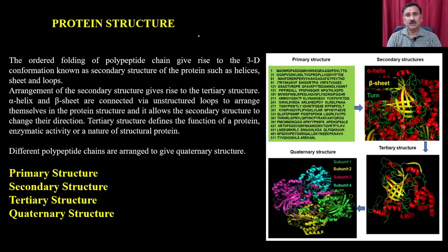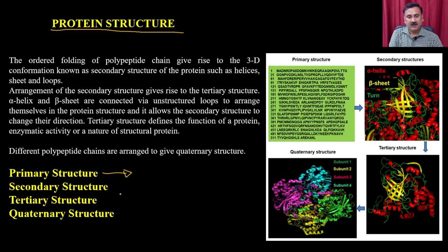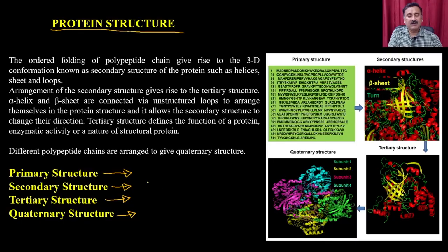Protein structure is presented by four levels: primary structure, secondary structure, tertiary structure, and in some cases quaternary structures. Primary structure is the amino acid sequence. Secondary structure includes alpha helix, beta sheets, and turns. When secondary structures come together and fold further, they give rise to tertiary structures.